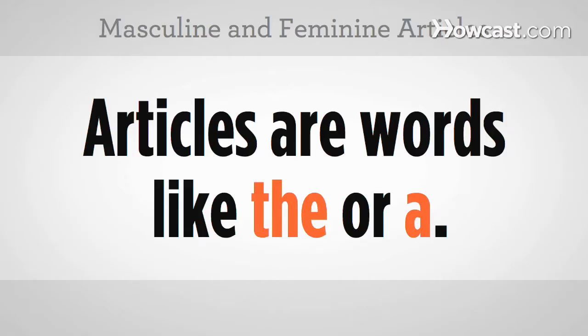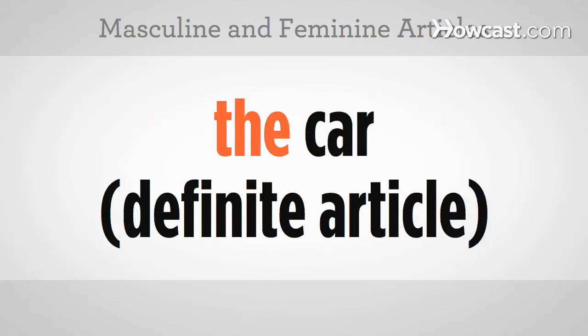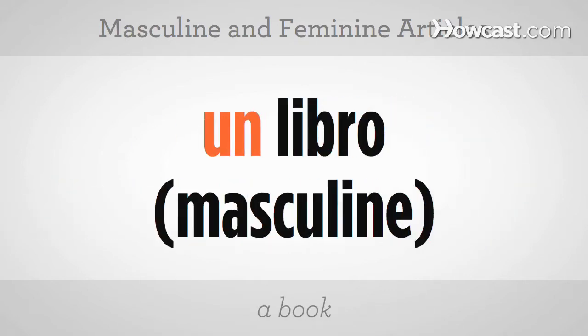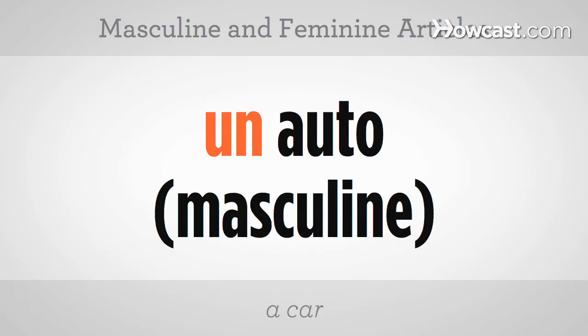Let's see how we can give these words articles. An article is something like 'the' — a definite article — or 'a' — an indefinite article. So let's do it in Spanish: 'un libro,' meaning 'a book' (masculine), and 'un auto,' meaning 'a car.'